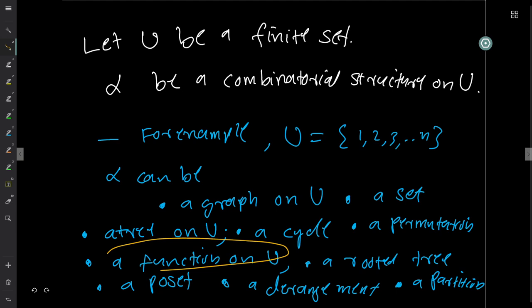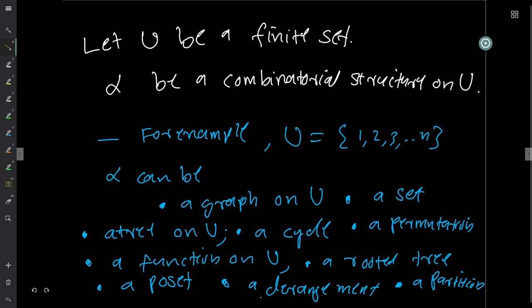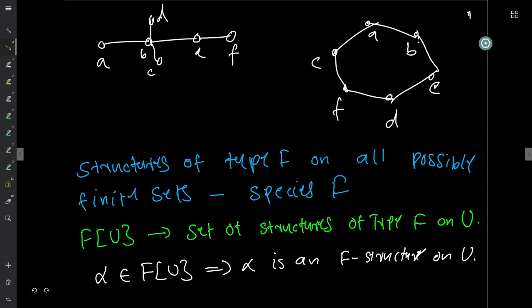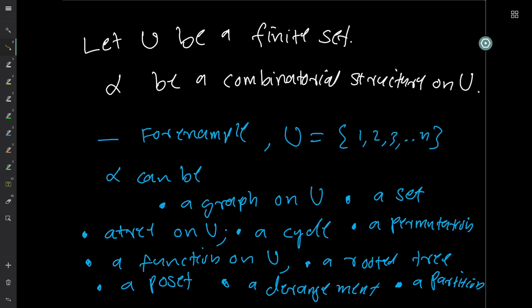You can define functions on U, basically endofunctions, or a rooted tree. You can define one node as special — say vertex 2 is special — and it has children 1, 3, and 7, and so on. You can define rooted trees, poset structures, derangements — permutations with no fixed points — and partitions. All these are examples of structures. In short, we are constructing structures on a given set.